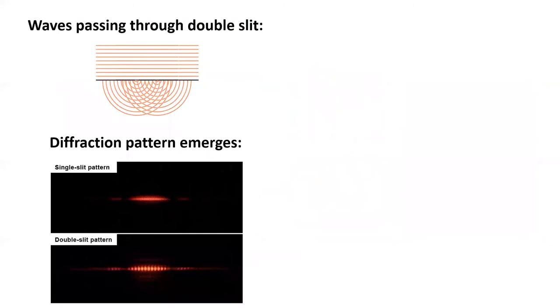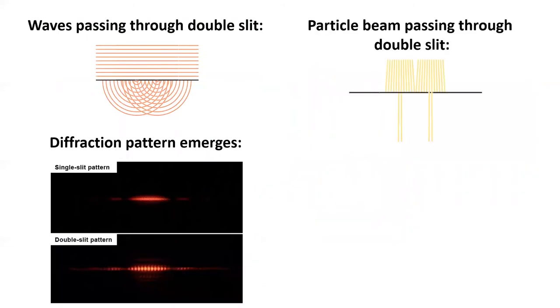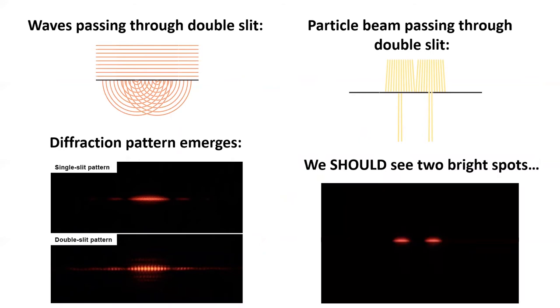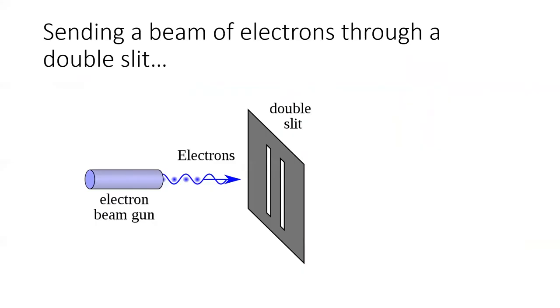So, if the diffraction pattern of light proves that light behaves like a wave, what might we expect when we pass a beam of particles through two slits? Well, I would certainly expect something much simpler, just two bright spots, one behind each hole.